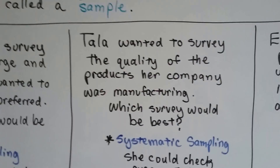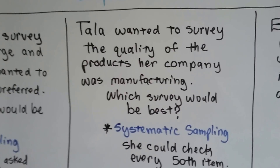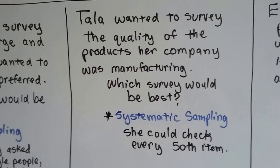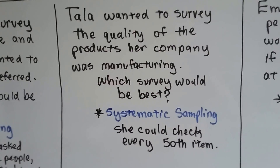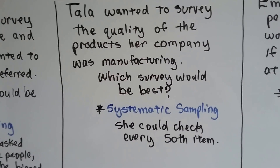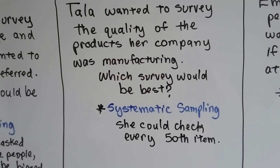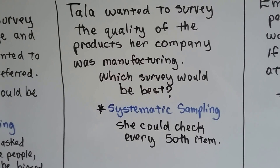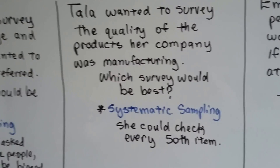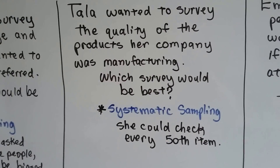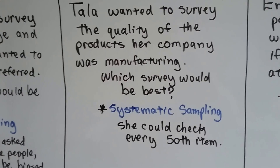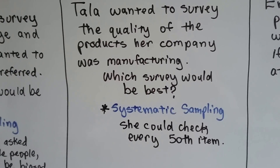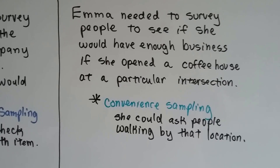Talla wanted to survey the quality of products her company was manufacturing. Which survey would be best? Systematic sampling — she could check every 50th item for quality to see systematically how they're doing.